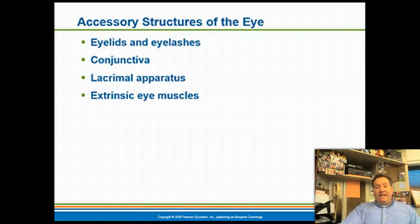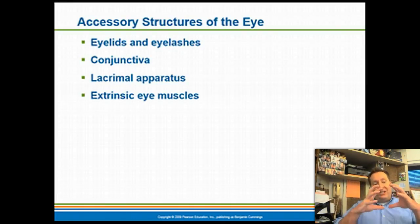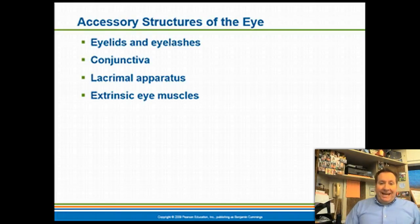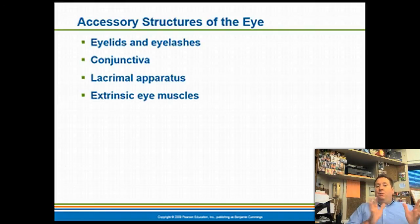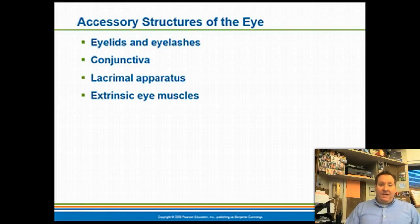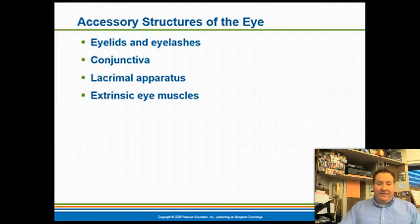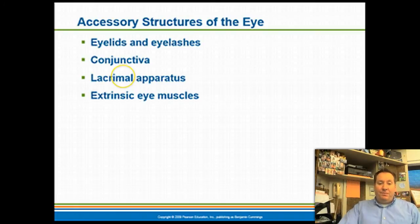The accessory structures of the eye are structures surrounding the eyeball that help protect it, lubricate it, and move it. These include the eyelids and eyelashes, the conjunctiva, the lacrimal apparatus, and the extrinsic eye muscles.